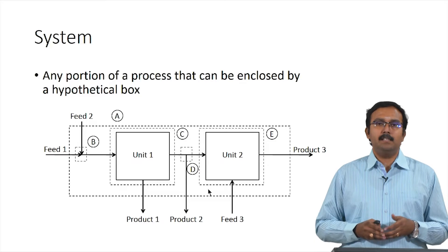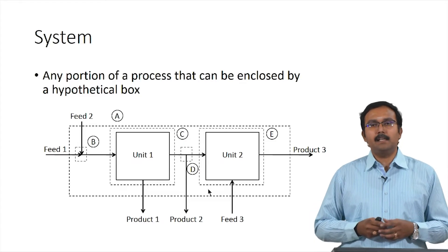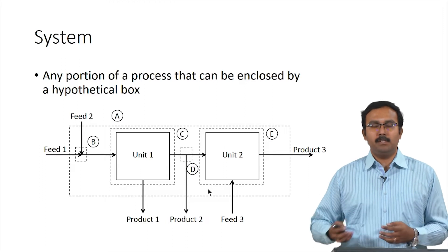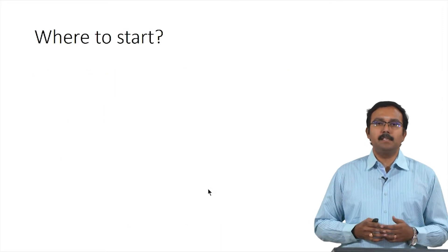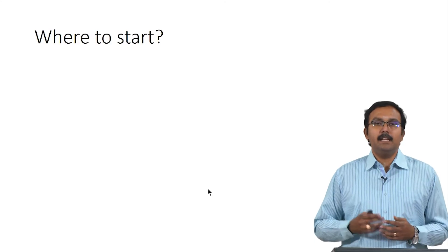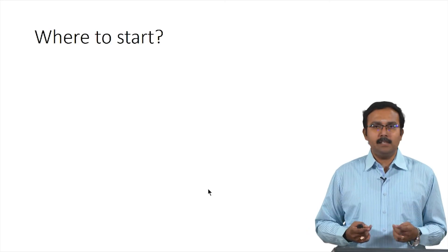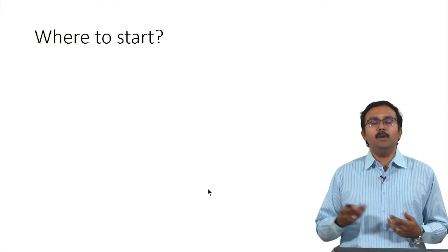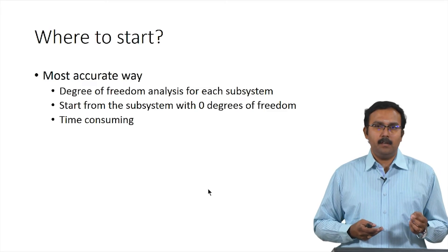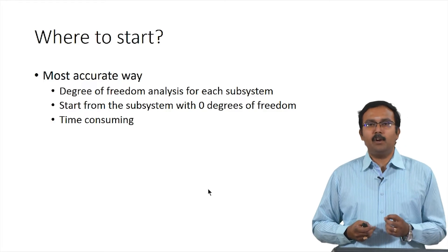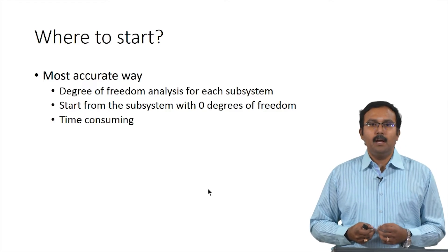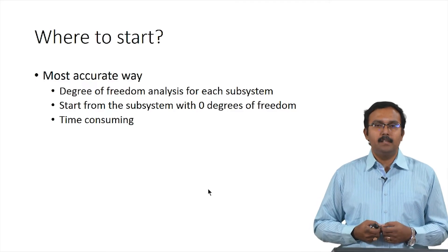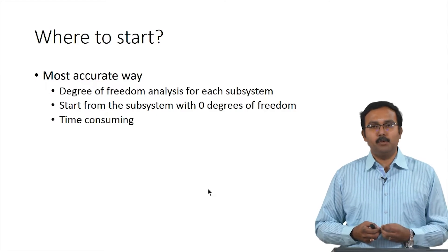You perform material balances using a chosen system, considering streams which cross its boundaries as inputs and outputs. This means there are multiple systems which we can study. The most accurate way is to perform a degree of freedom analysis for each subsystem and start from the one with zero degrees of freedom, though this process is very time consuming.